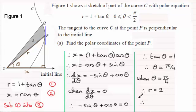And then if we substitute this into equation 1, therefore R must be equal to 2. So the coordinates of point P are 2, π upon 4.